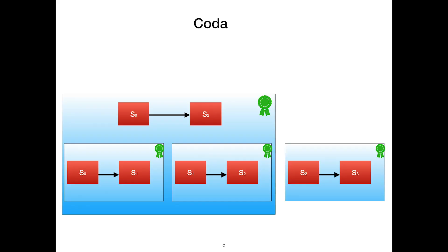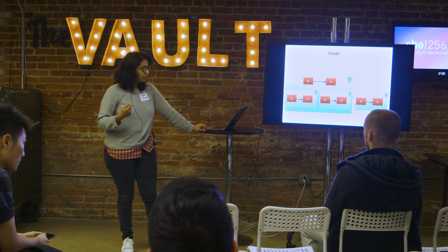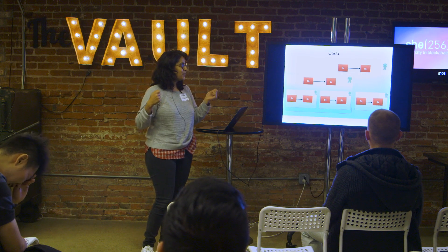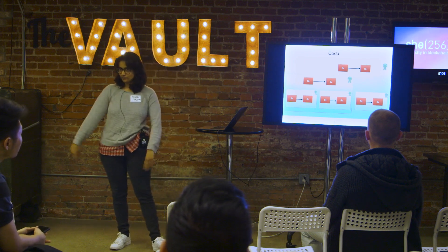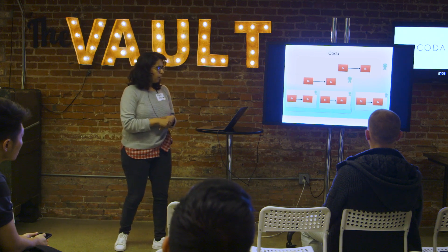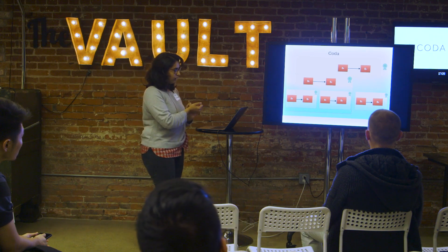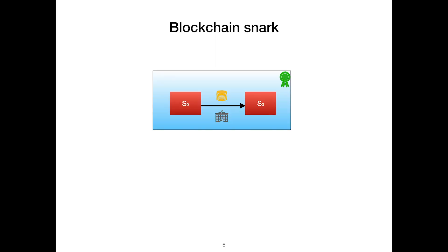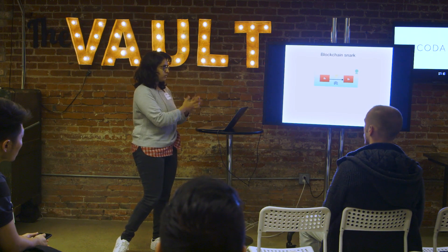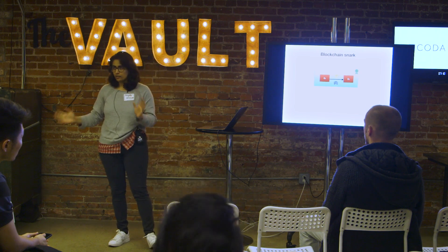When the third block comes in, which proves that it transitions to state 3, you compose those two proofs to get another proof that says this is a transition from state 0 to state 3. This is how you recursively compose all the proofs you get. Finally, there is one blockchain SNARK that proves the entire transition from state 0 to state 3, and all the transactions and the consensus mechanism are baked into this proof.